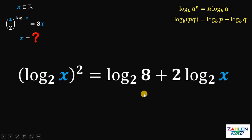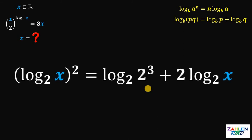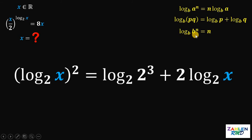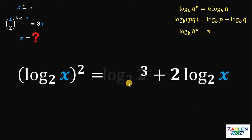Also take note that 8 is just 2 cubed. Using the property that logarithm of b raised to n to the base of b equals n, this logarithm of 2 raised to 3 to the base of 2 is just 3.